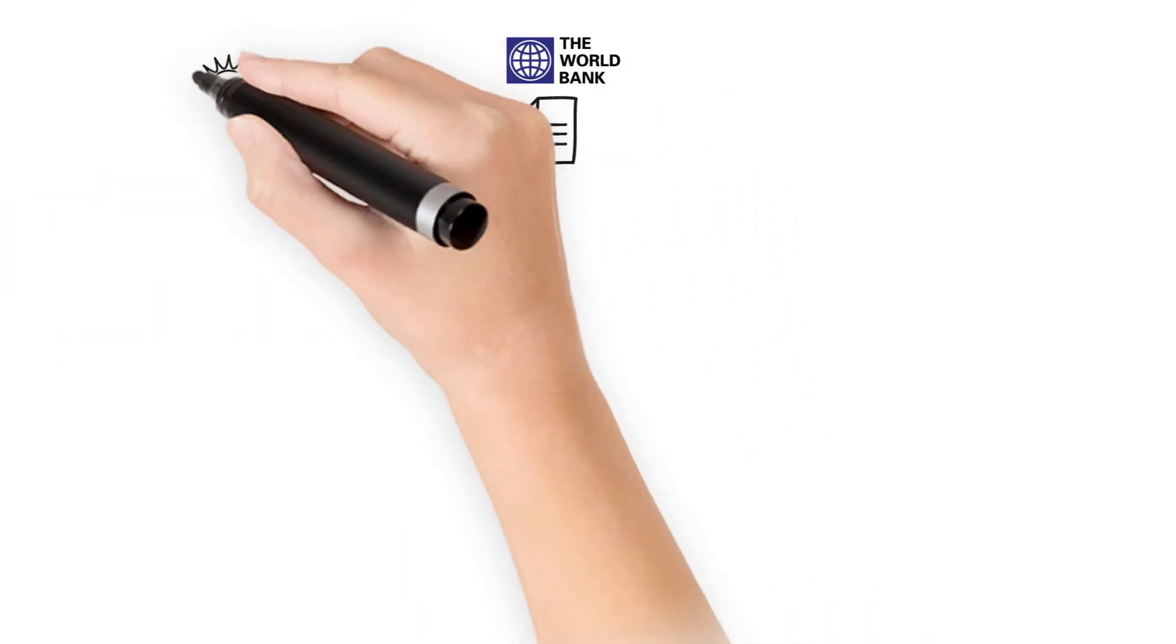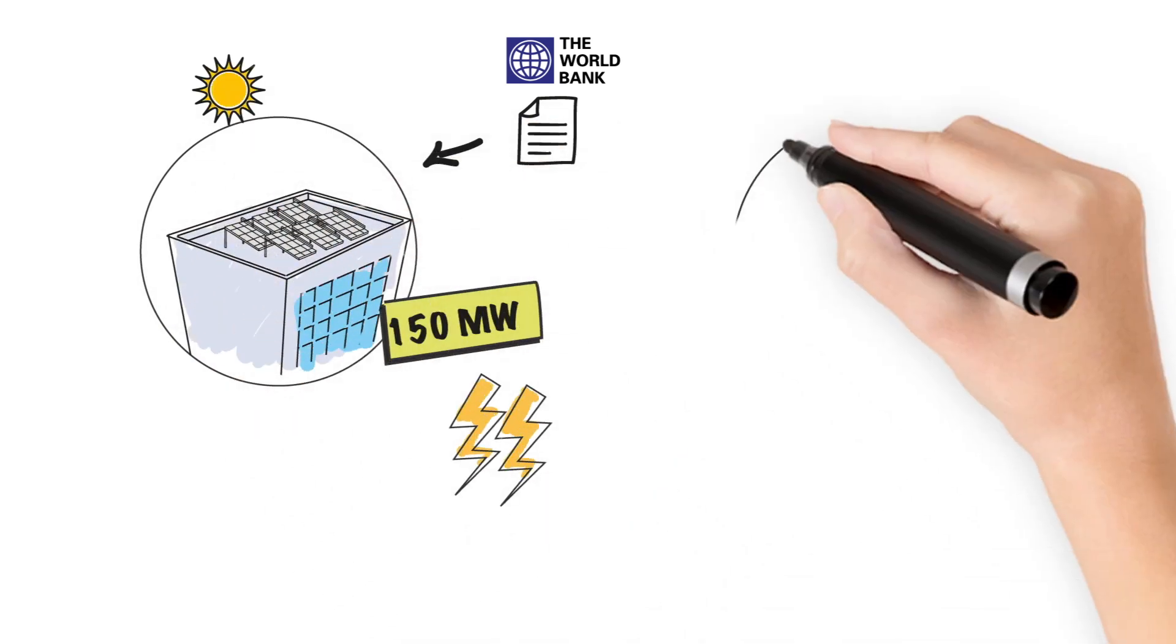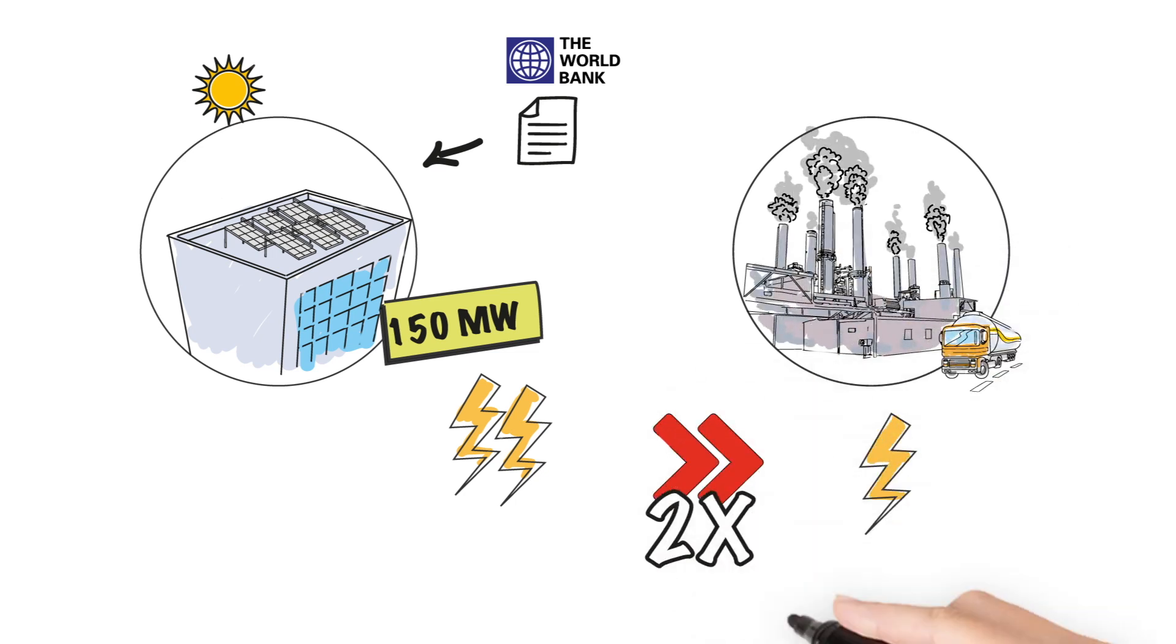A World Bank study shows that rooftops in Gaza have the potential to produce over 150 megawatts of solar energy. That's more than double the current annual production of the Gaza power plant.